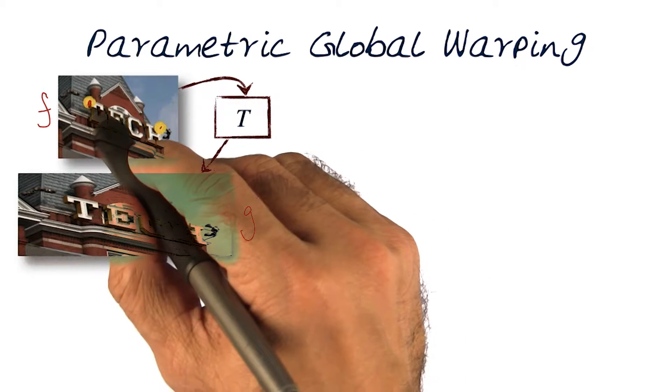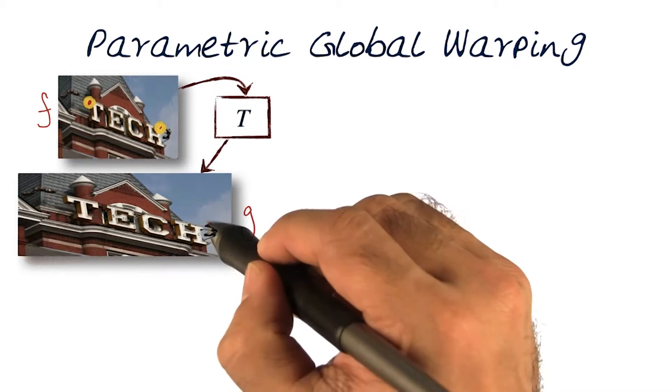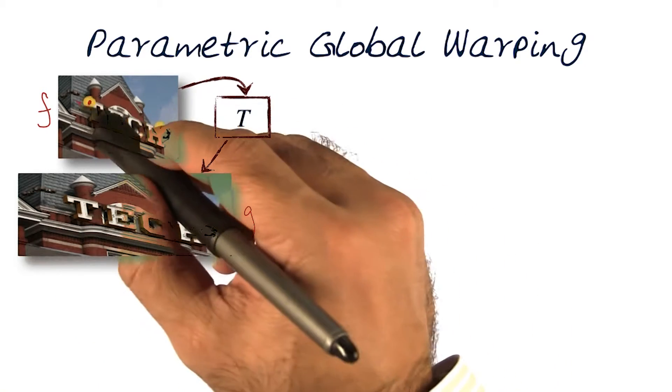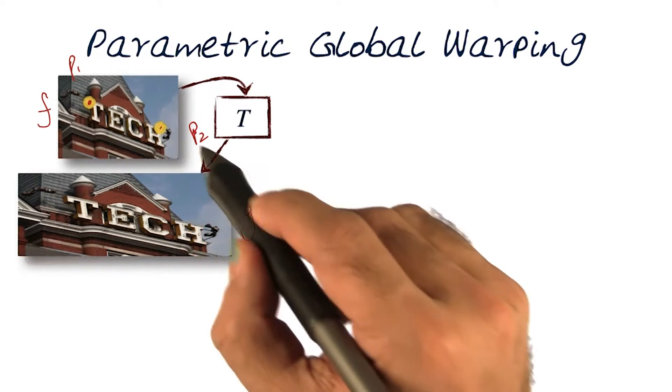What we're interested in is seeing where these two points would be on this image, where would they transform to. So call this one p1, and we'll call this point here p2.